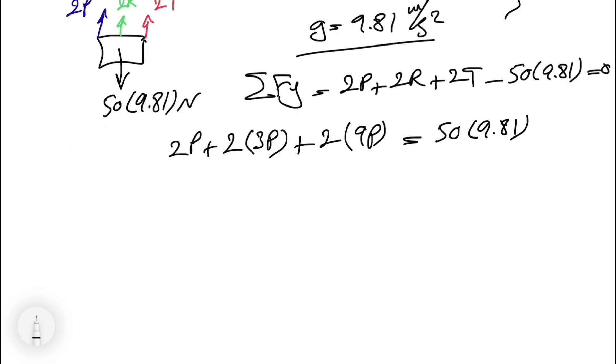If we calculate this, we have 6P, 18P, 6P here, and 2P, which means we have 26P equals to 50 times 9.81. And if we calculate this, we'll get P equals to 18.9 N.